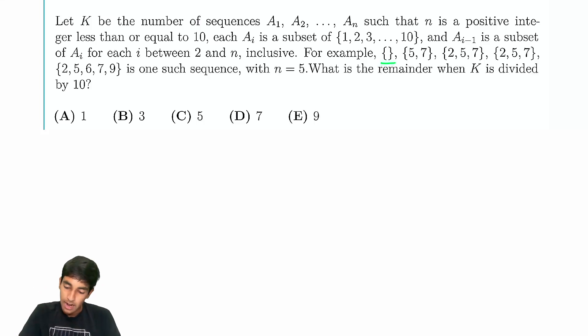For example, we have this thing here: empty set, {5,7}, {2,5,7}, {2,5,6,7,9}. Basically, what it's saying is that, take some numbers from 1 to 10.